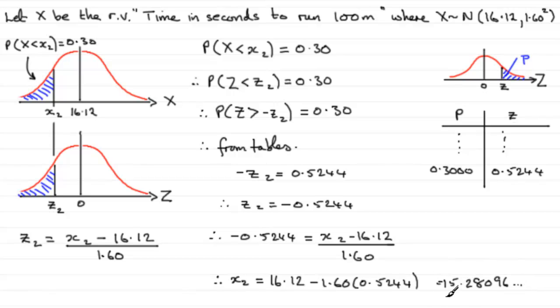So, let's round that up say to two decimal places. Then what we get is 15.28 to 2 DP, two decimal places.